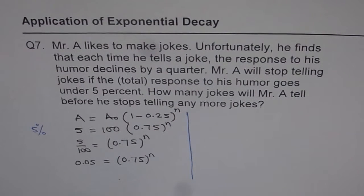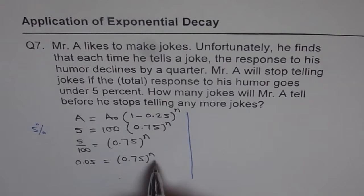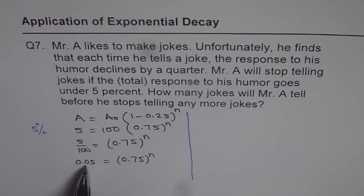That means we can substitute different values of n and figure out 0.75 to the power of what is close to 0.05. That is one way of doing it. You can try different values of n: 5, 6, 7, 8, 9, 10 and so on. The other way is to use log.